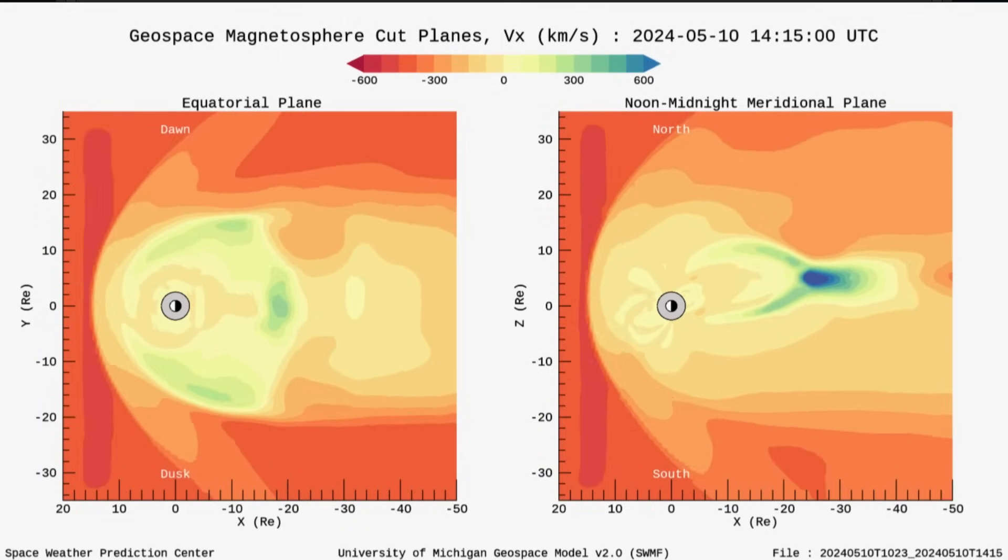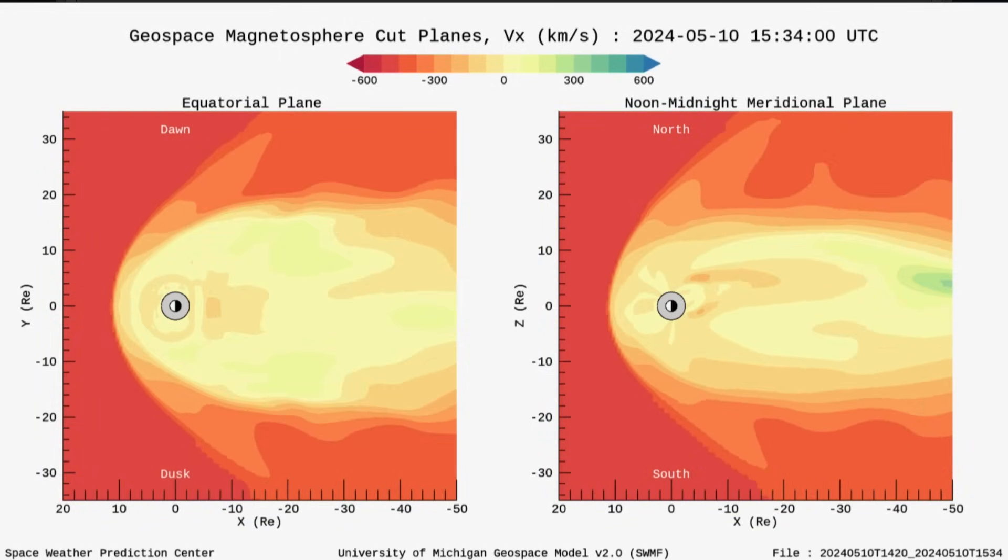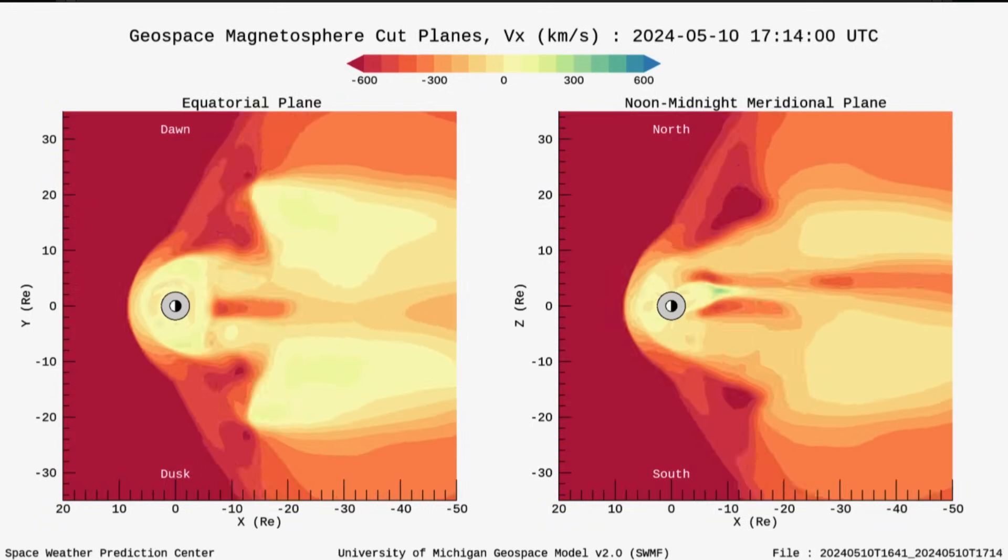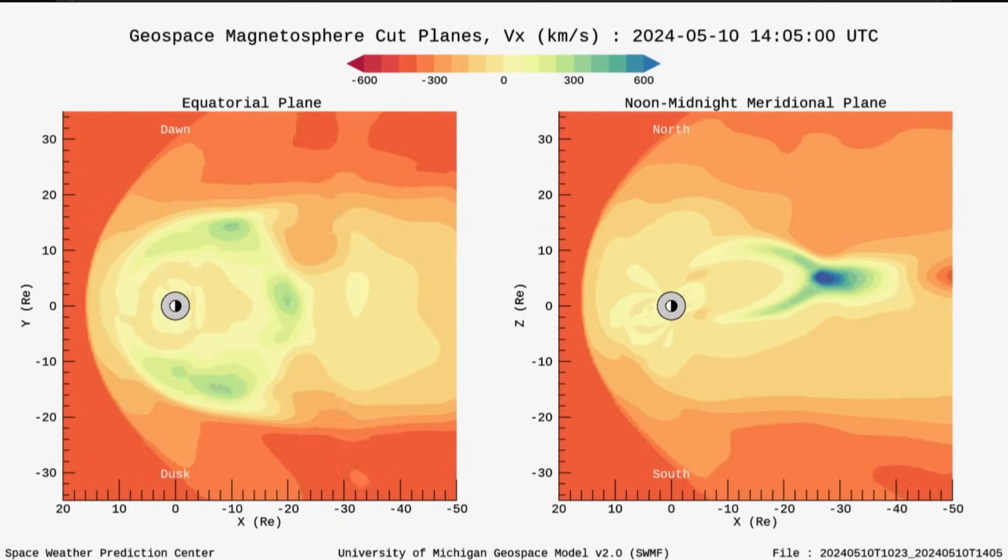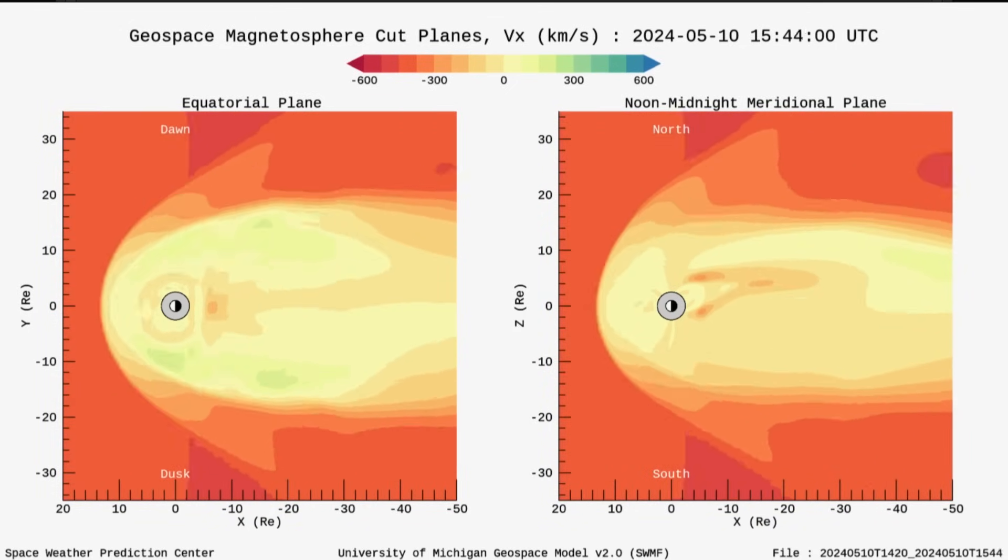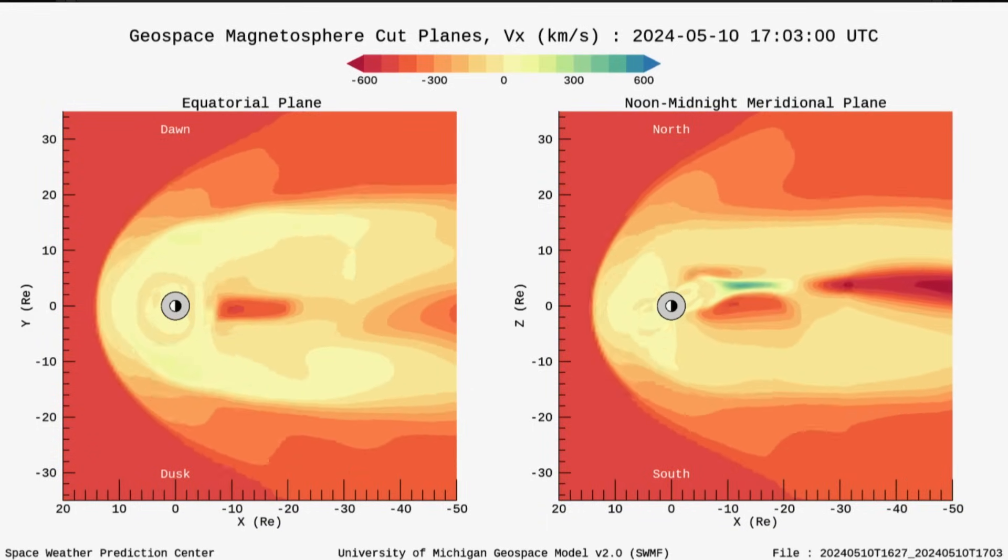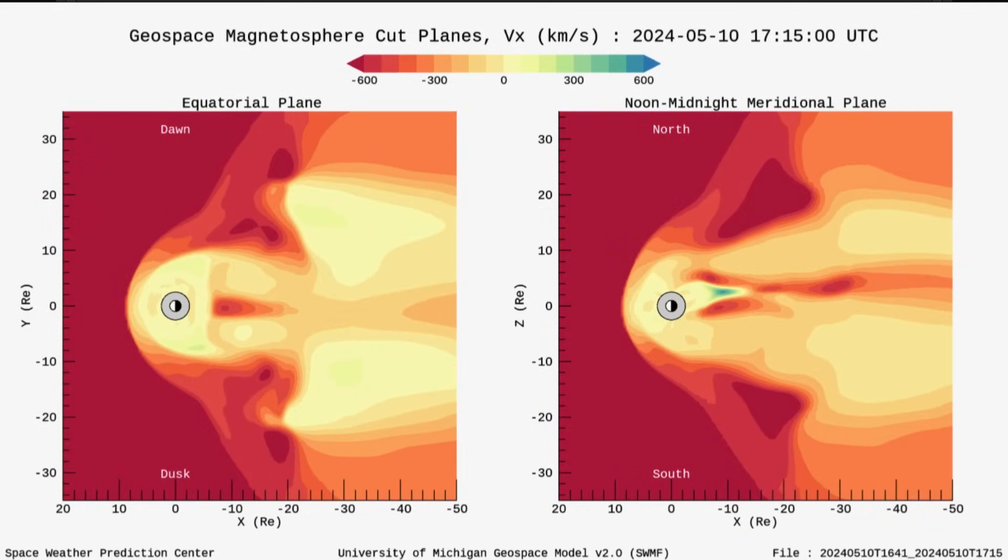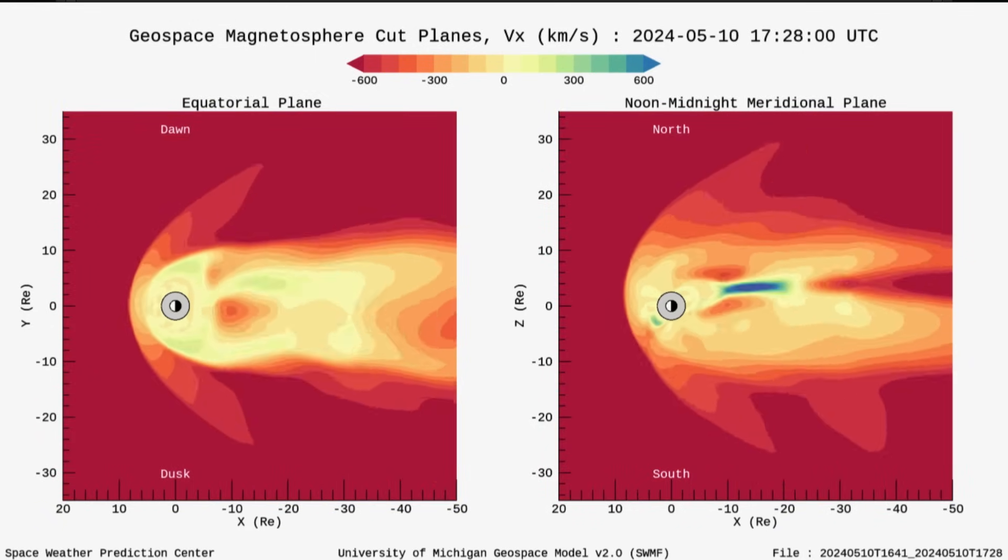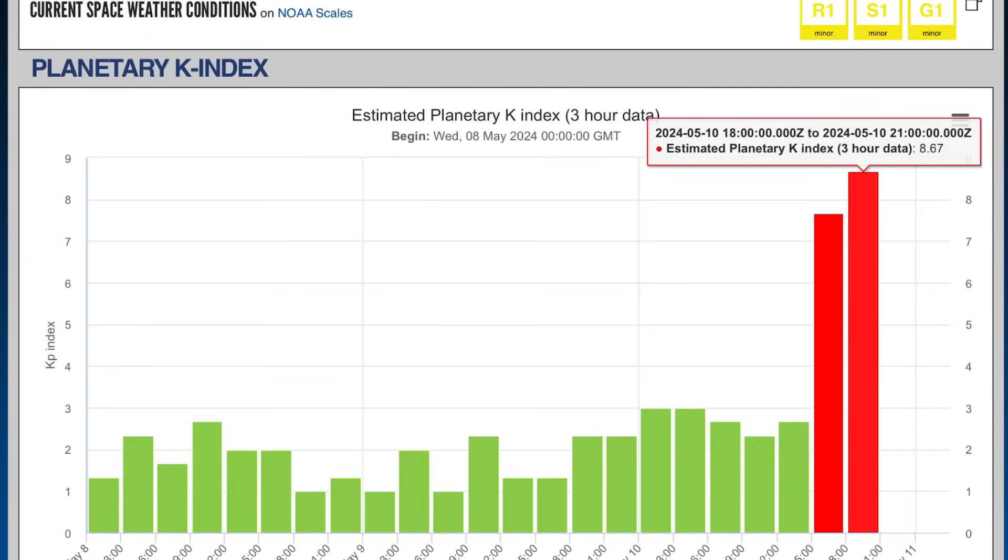So, that is the pressure that our planet is under, and having a look here at our solar winds, showing the speeds. The darker the red, the faster the speeds. Geospace magnetosphere cut planes up and over 700 kilometers per second, and that will continue now for the next couple days throughout Mother's Day weekend. So, heads up here as we are going through a severe level 4 geomagnetic event as we speak and will for the next two days.